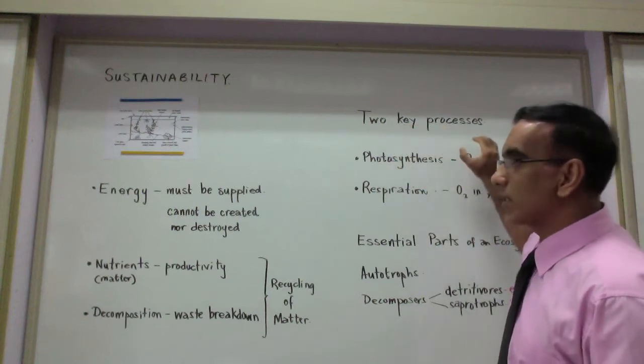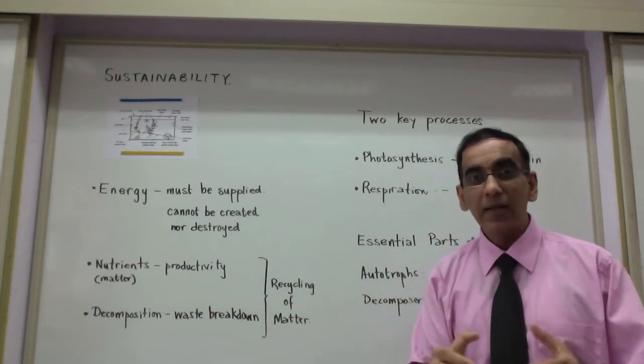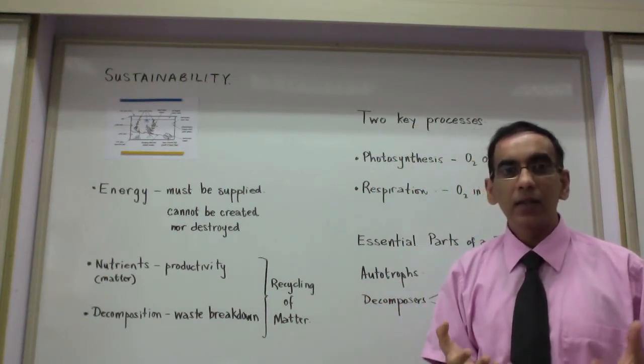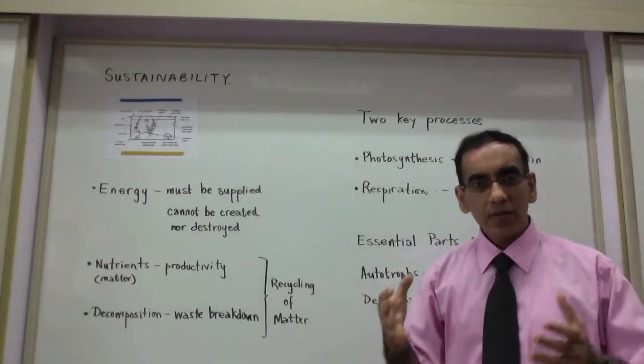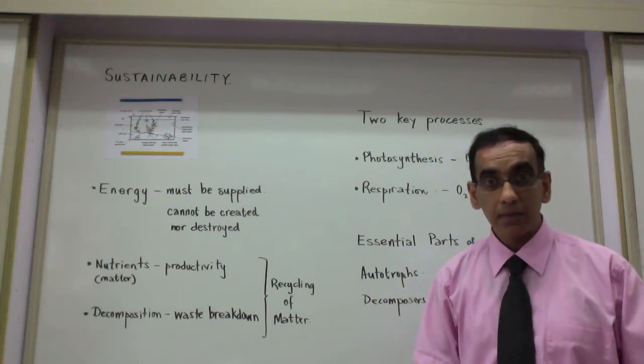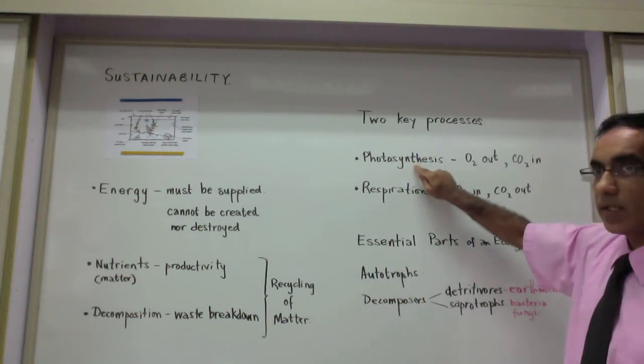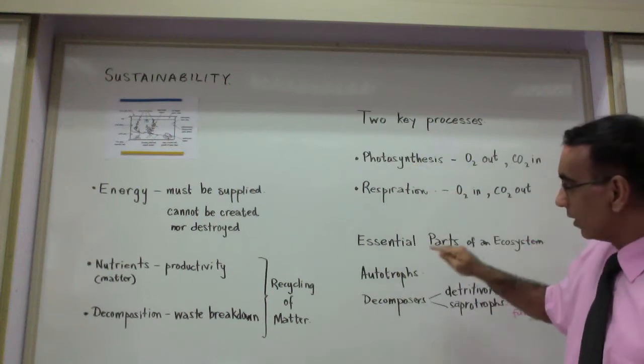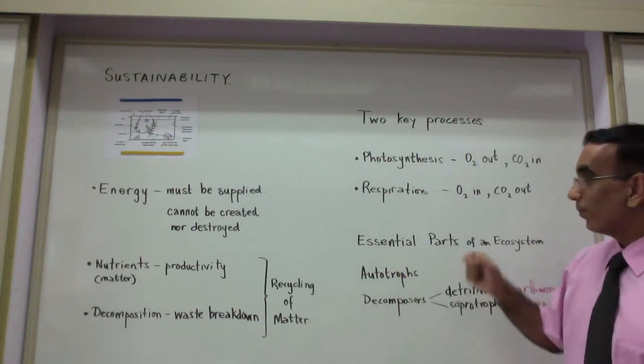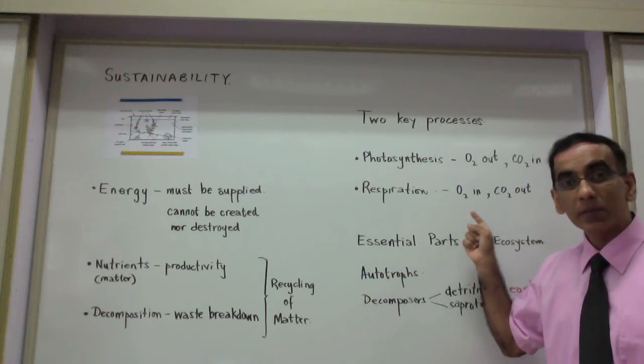Two key processes help us to understand the recycling that must happen in a self-sustaining mesocosm, or a sustainable closed system. Photosynthesis, which is carried out by the green plants, the producers, also known as the autotrophs. Plants themselves carry out respiration.